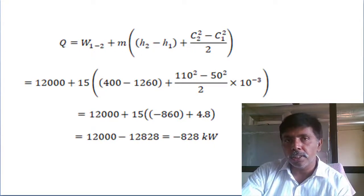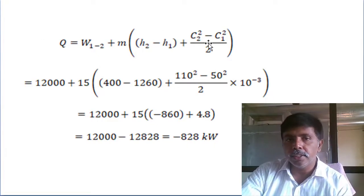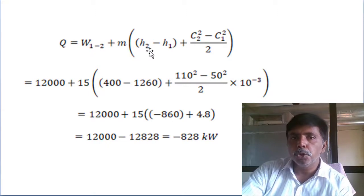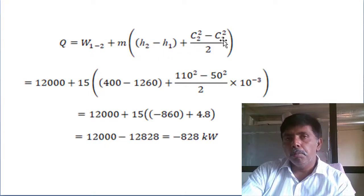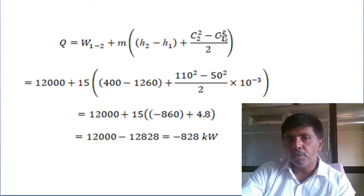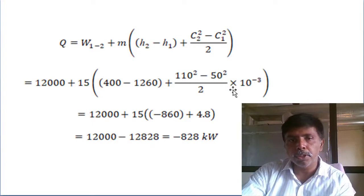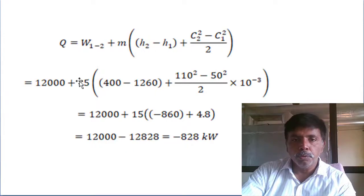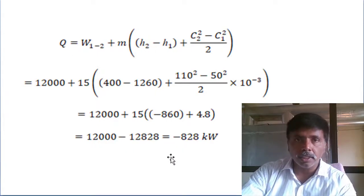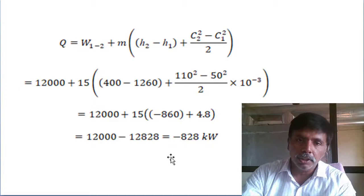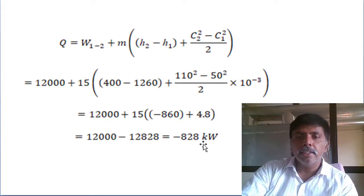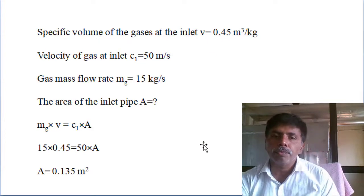Q = work done + m·[(h2 - h1) + (c2² - c1²)/2]. Remember to convert kinetic energy from joules to kilo joules by dividing by 1000. Substituting the values, we get Q as a negative value — the question itself asks for heat loss, so a negative result confirms we are in the right direction. Q = -828 kW.